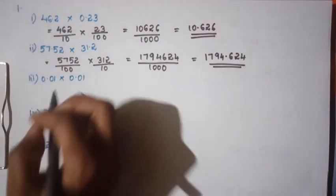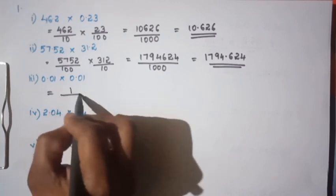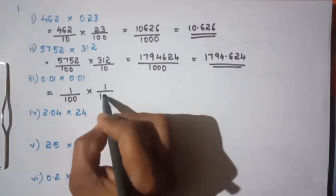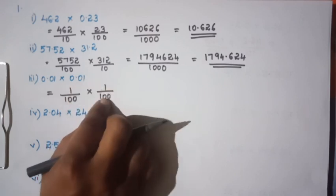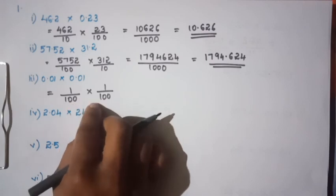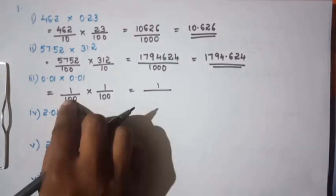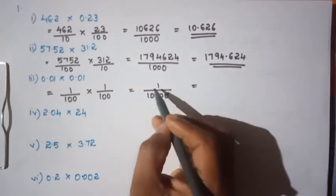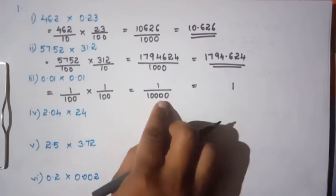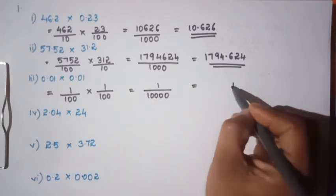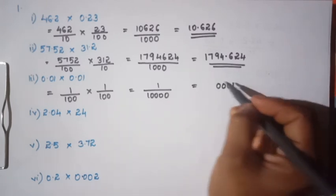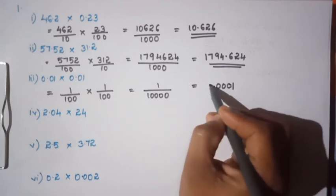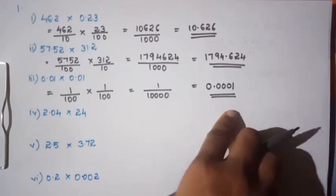The third question is 0.01 × something. 0.01 is 1 divided by 100. We count the decimal places — there are 4 decimal places total — giving us 4 zeros. The answer is 0.0004.